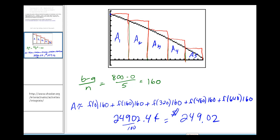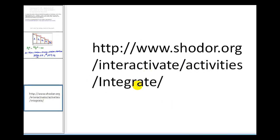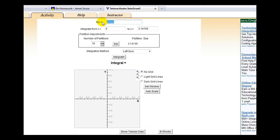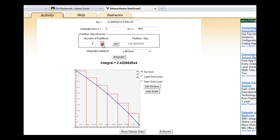Now I want to show you one more thing. I posted this website in yesterday's announcement, and it's a very nice way to check our work. We can type in our function here, select our interval, which was from zero to 800, select the number of partitions, which was five.